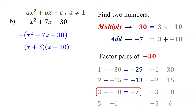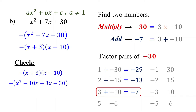Do not forget the negative sign at the front. Therefore, this is the answer. You can also check this by first foiling (x plus 3) times (x minus 10), and then distributing the negative sign. In this example, we were able to factor out the leading coefficient, but this is not always the case.